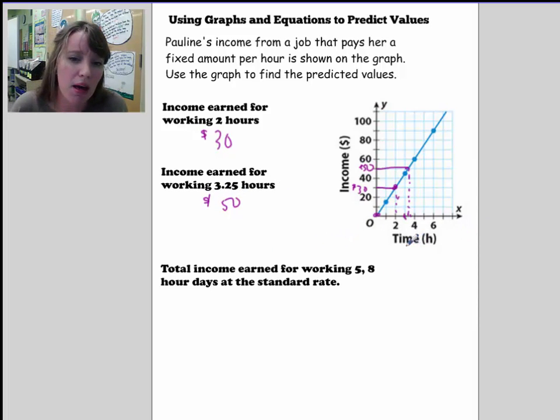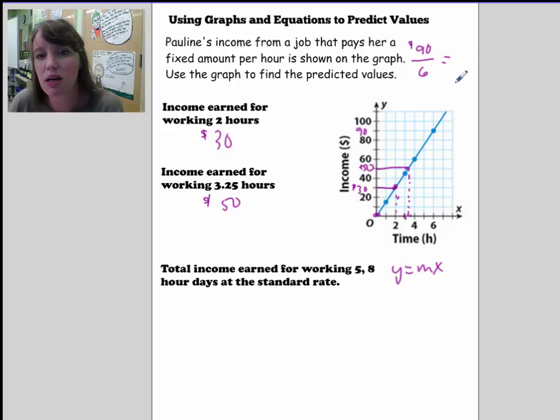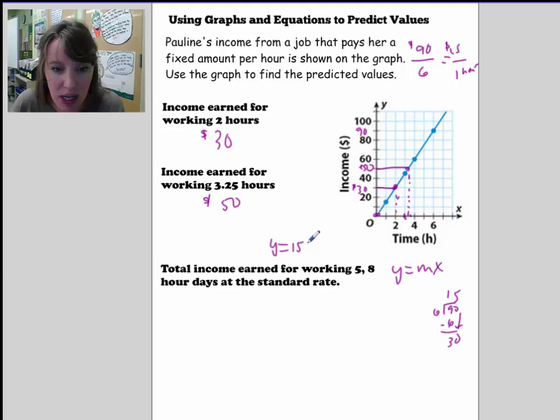If I made an equation, it would be of the form y is equal to mx because your b is already zero. So here I can actually do this really quickly. Let's just try it. This would be $90. So for 6 hours, she makes $90. So let's take $90 divided by 6. Let's see, 6 goes into 90. That's once 6, 3, carry the zero down, that would be 15. So that would be $15 per one hour.